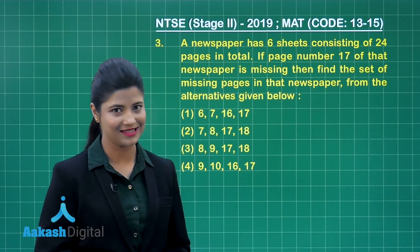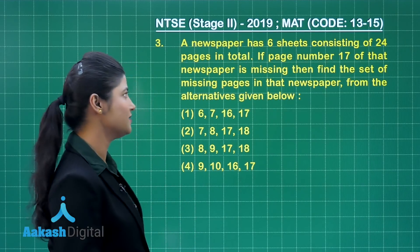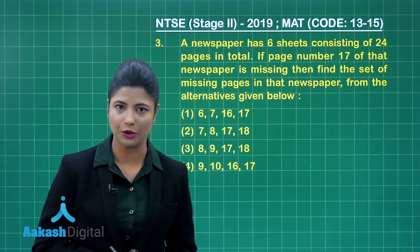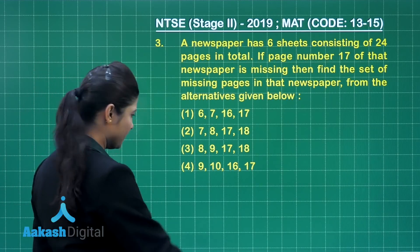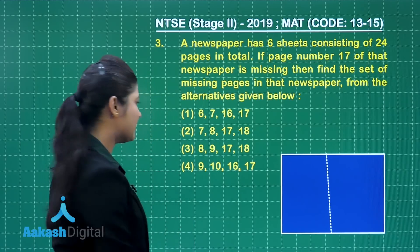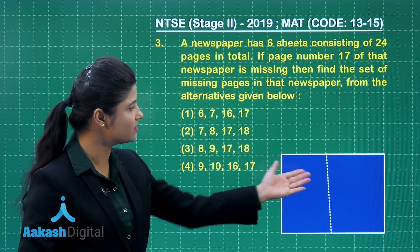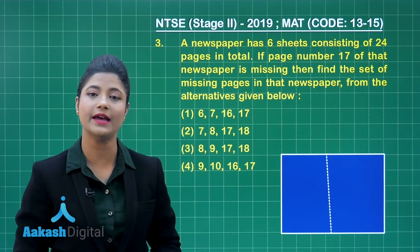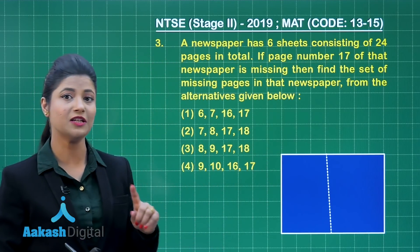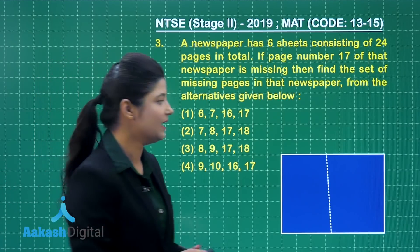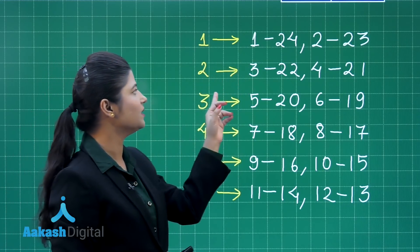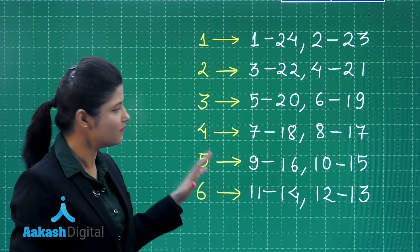Question number 3 states: a newspaper has 6 sheets consisting of 24 pages in total. If page number 17 is missing, find the set of missing pages from the alternatives given. When you open the newspaper from the centre, it is folded so that 2 pages are in the front and 2 pages are in the back — meaning 4 pages per sheet. So the first sheet contains pages 1 and 24, and pages 2 and 23. The second sheet contains pages 3 and 22, and pages 4 and 21, and so on.